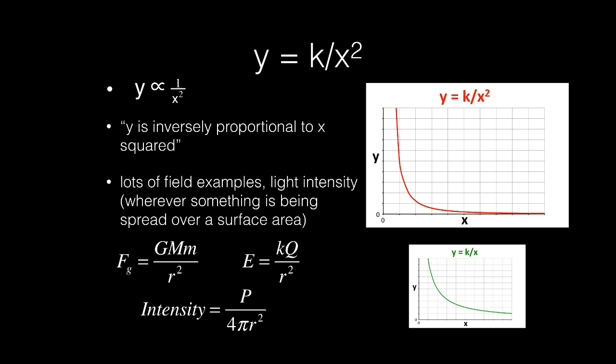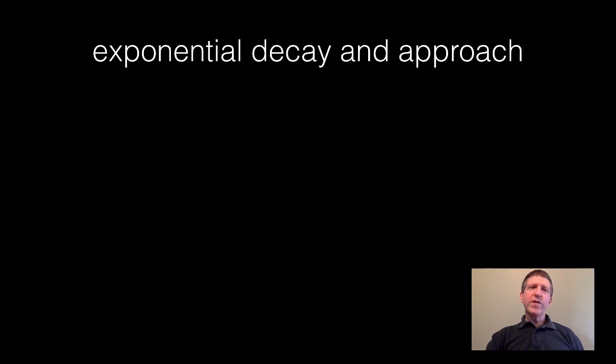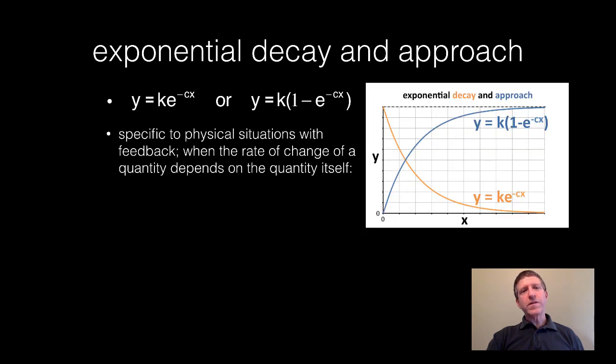Another relationship we're going to talk about is exponential decay and approach. I'm not going to talk about this too much now, but it is of the form y equals ke to the negative cx, where k and c are constants, or y equals k times the quantity 1 minus e to the negative cx. This is actually pretty common in physics, specifically to physical situations with feedback, when the rate of change of a quantity depends on the quantity itself.